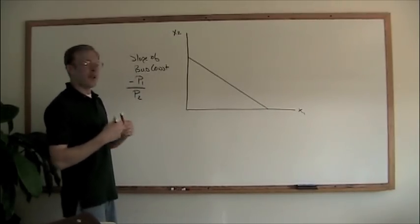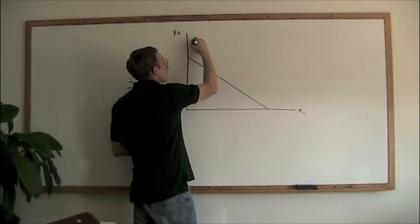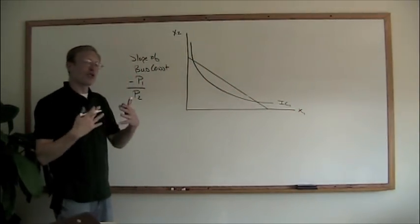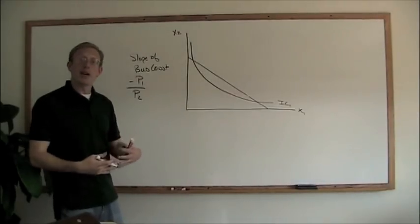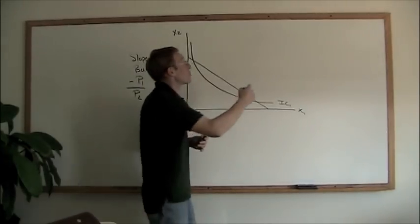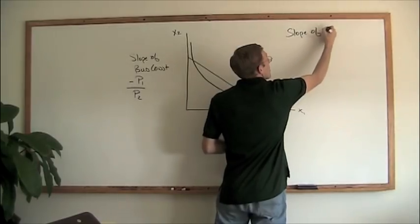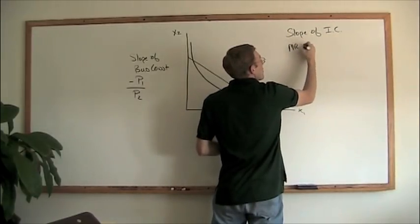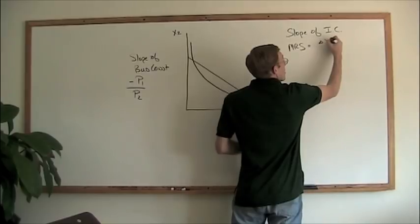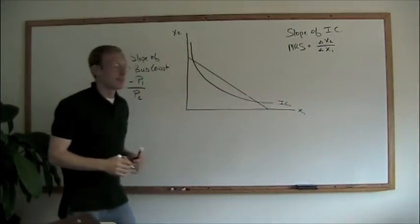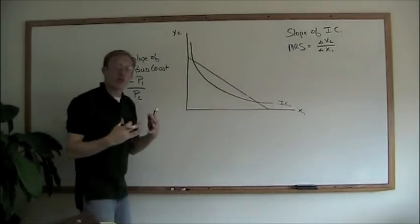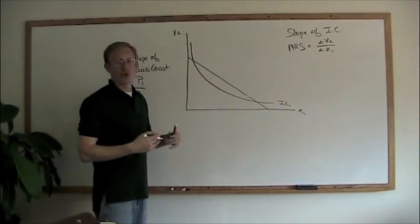Now our indifference curves come into play, and they're a little bit different. We have this downward sloping indifference curve — we'll call that indifference curve 1. The slope of the indifference curve tells us the marginal rate of substitution, which is equal to the change in X2 over the change in X1. So now we have the two slopes and the two curves, and we want to find out where is the optimal amount of the two goods we're going to be purchasing.